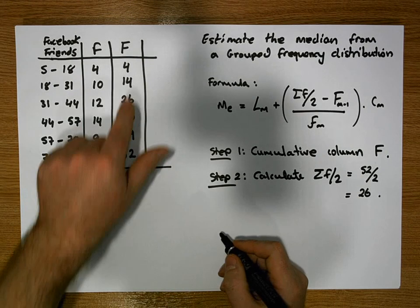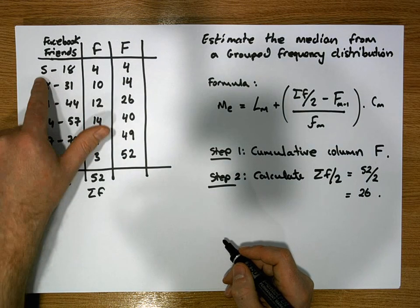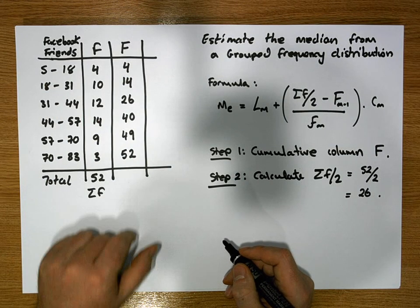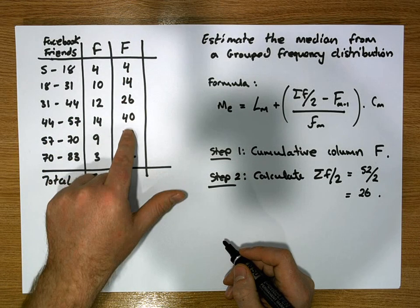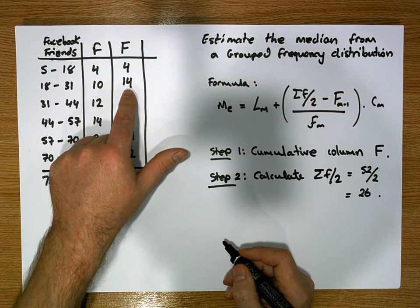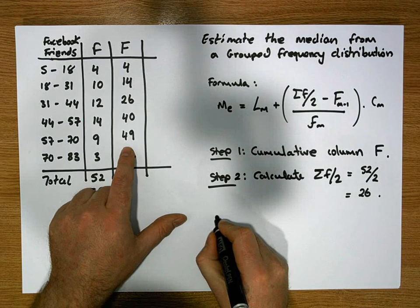What we know from a cumulative frequency perspective is that the data is all ordered from smallest through to largest. So what we need to do is go through our cumulative frequencies until we find the first cumulative frequency that exceeds 26.